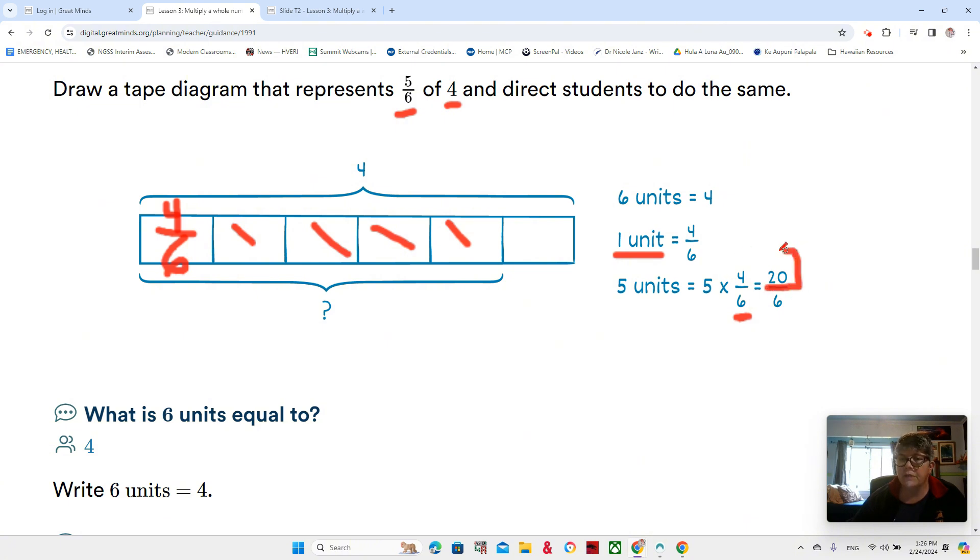Each one of them is four-sixths, so can I do five times four-sixths? Well, sure I can. Five times four-sixths is twenty-sixths. Can I leave it as an improper fraction? Well no, I really shouldn't do that. I should divide.